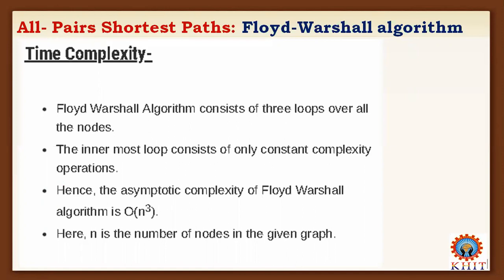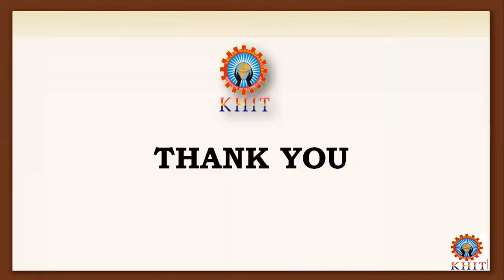Now for the time complexity of the Floyd-Warshall algorithm: the algorithm consists of three nested loops over all nodes. The outer two loops execute O(n²) times and the innermost loop executes n times, giving a total time complexity of n × n² = O(n³). The highest-order term is n³, so the time complexity of this algorithm is O(n³).